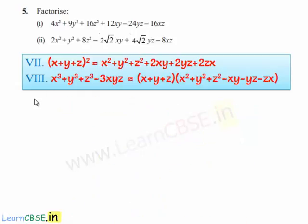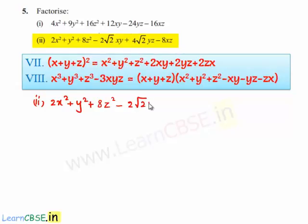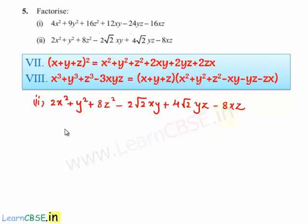Coming to the second one, which is 2x square plus y square plus 8z square minus 2 root 2 xy plus 4 root 2 yz minus 8xz. In order to find the factorization for this, we need to make use of the seventh identity, which is x plus y plus z whole square is equal to x square plus y square plus z square plus 2xy plus 2yz plus 2zx.